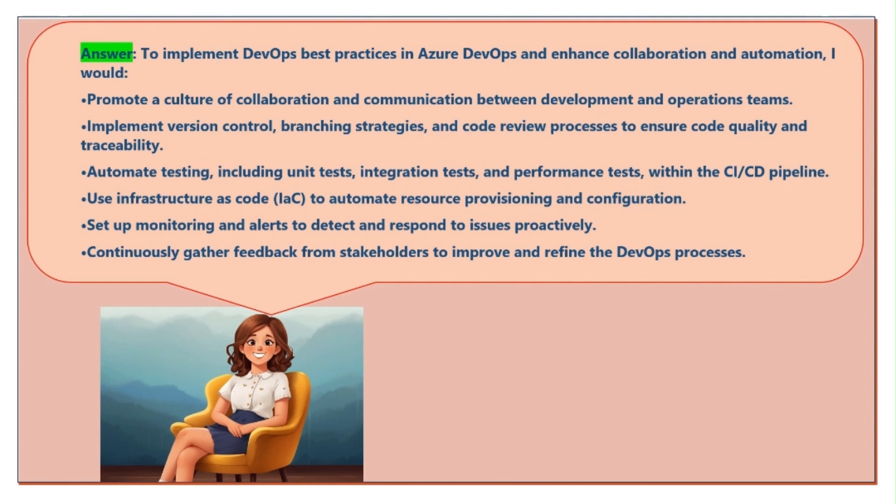Use infrastructure as code (IaC) to automate resource provisioning and configuration. Set up monitoring and alerts to detect and respond to issues proactively. Continuously gather feedback from stakeholders to improve and refine the DevOps processes.